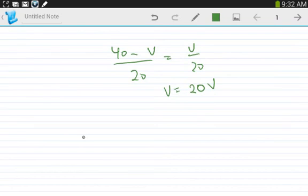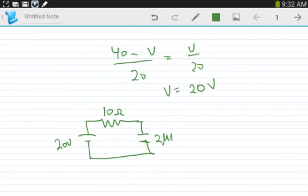Now we have the equivalent circuit: 10 ohms, 20 volts, and 2 microfarads. The time constant is actually 10 ohms times 2 microfarads. I didn't really need to solve for the voltage because I'm only concerned about the time constant.